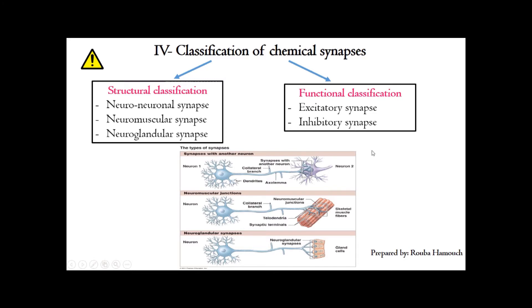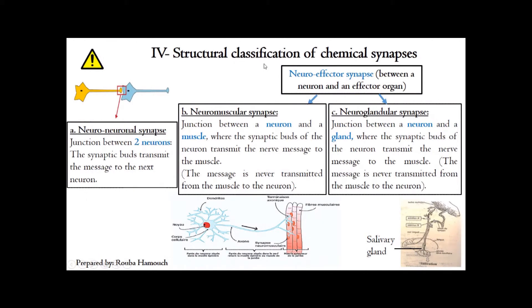For the structural classification of chemical synapses, we have the neuro-neuronal synapse — shown in the red zone — between a pre-synaptic neuron and a post-synaptic neuron. The message passes from the pre-synaptic neuron to the post-synaptic neuron and is always unidirectional. We also have the neuromuscular synapse, where the synaptic knobs of the pre-synaptic neuron transmit the message to the muscular cells.